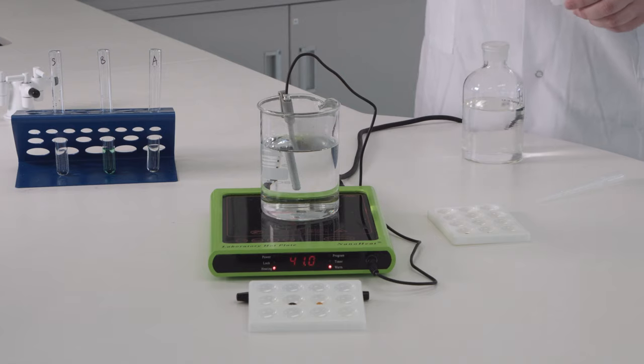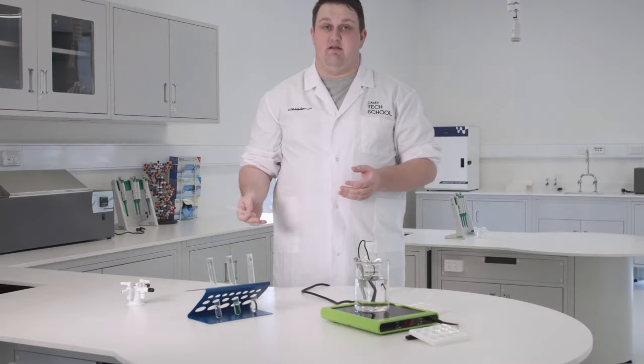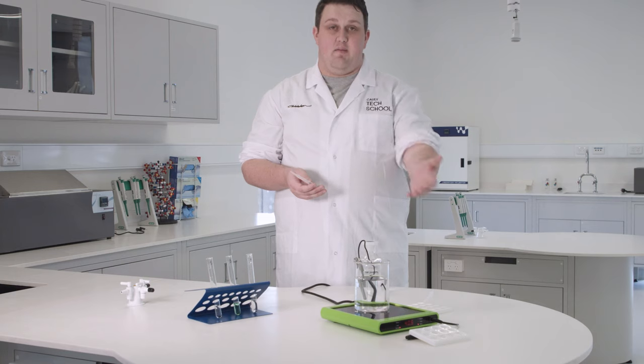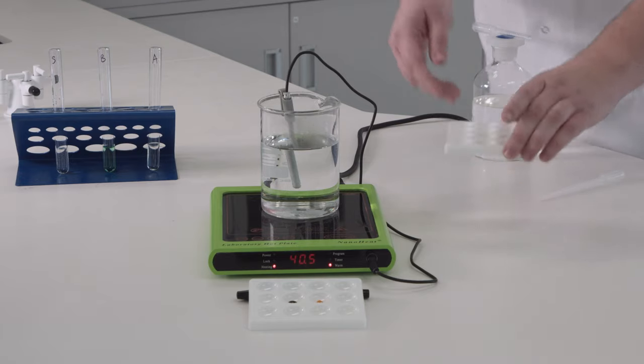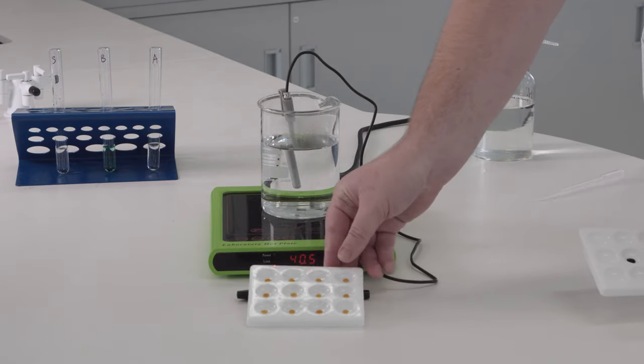When no starch is present, as would be the case when the amylase has broken it down into glucose, the color remains amber or brown. We're going to be using a spotting tile like this to check the concentration of starch present every 30 seconds.